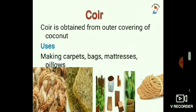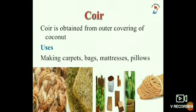We also yield plant fiber from coir. Coir is a rough fiber obtained from the outer covering of coconuts. It is relatively waterproof and resistant to damage by sea water. It is used to make products such as mats, ropes, brushes, and packing material. Kerala in India and Sri Lanka are the major producers of coir. It is also used for making carpets, bags, mattresses, and pillows.